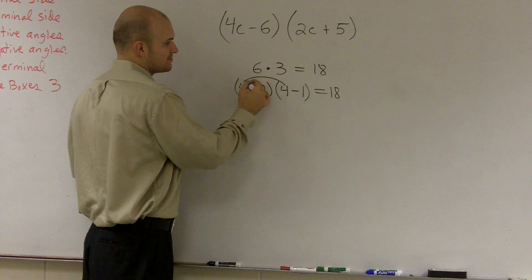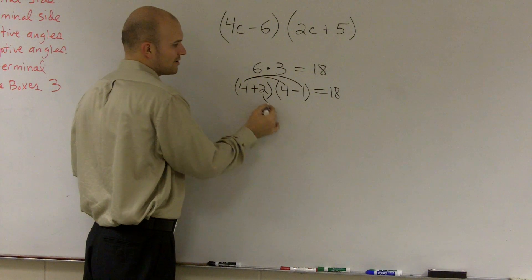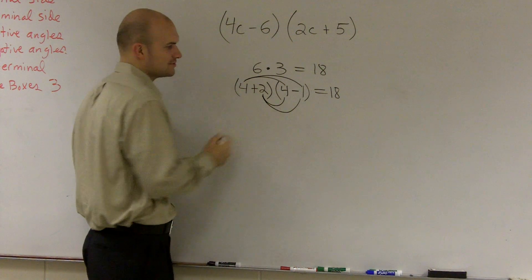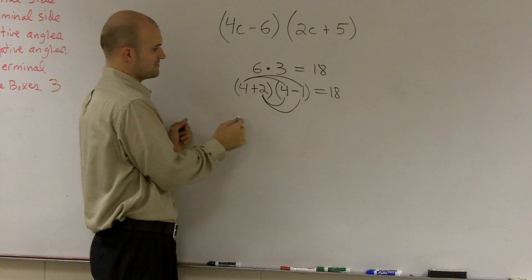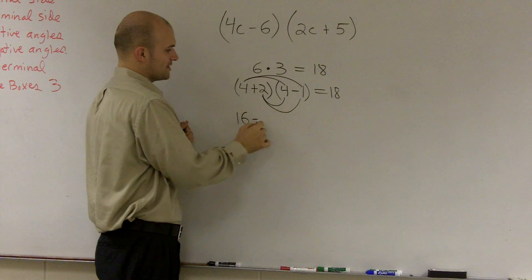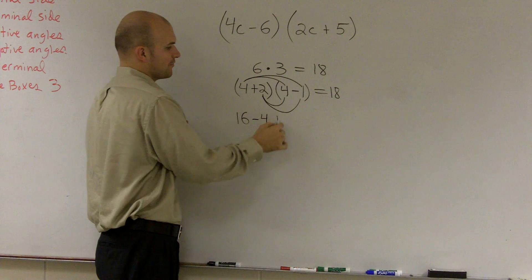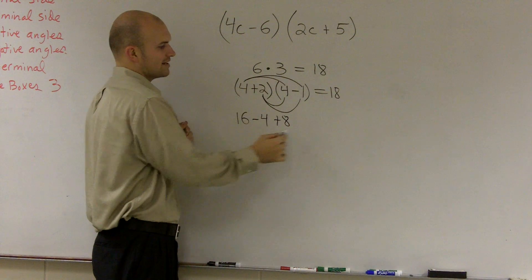what you're going to want to do is multiply your front term times 4 and times negative 1. And the second one, 2 times 4 and 2 times negative 1. So 4 times 4 is 16. And 4 times negative 1 is negative 4. 2 times 4 is 8. And then 2 times negative 1.